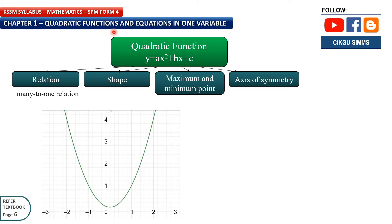Chapter 1: Quadratic Functions and Equations in One Variable. Today we will learn about four things about quadratic functions: the relation between x and y, the shape of quadratic functions, what is maximum and minimum point, and also the axis of symmetry.